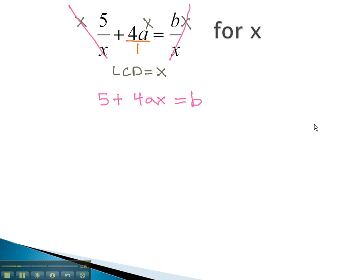Now that we've cleared the fractions, we can begin solving for the variable, just as we have with other formulas. We balance through the equal sign and get rid of the term without the x. Here, it's a positive 5. The opposite of a positive 5 is a negative 5.